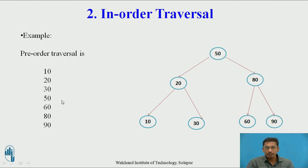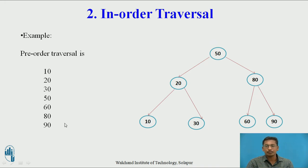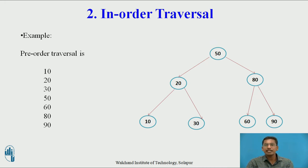Then visit root — 50 will appear as output. Then traverse right subtree in in-order: 80 becomes sub-root, traverse left subtree gives 60, then root 80, then right subtree 90. Remember that when you find the in-order traversal of a binary search tree, the output will be in ascending order. This is an important property: in-order traversal of any binary search tree gives output in ascending order with natural ordering.